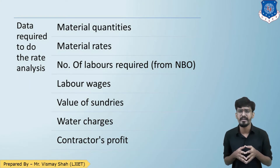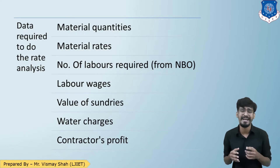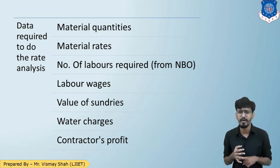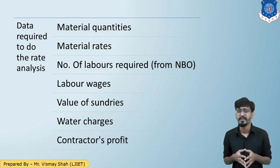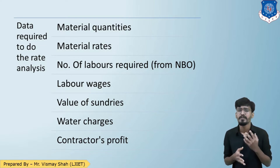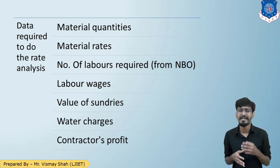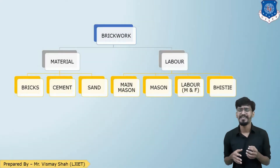Before undertaking any numerical based on rate analysis, the data required are: material quantities, material rates, labor numbers from the MBO, labor wages, sundries, water charges, and contractor's profit. With all of these elements we can perform the rate analysis. So let us start with the partition brick wall.